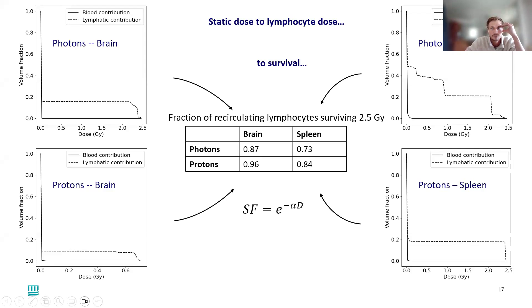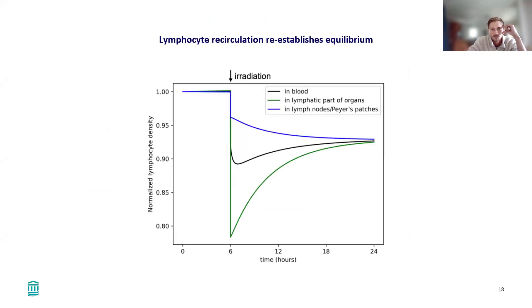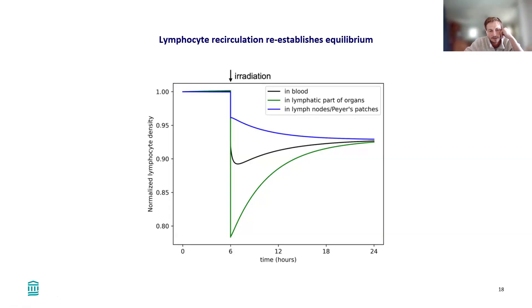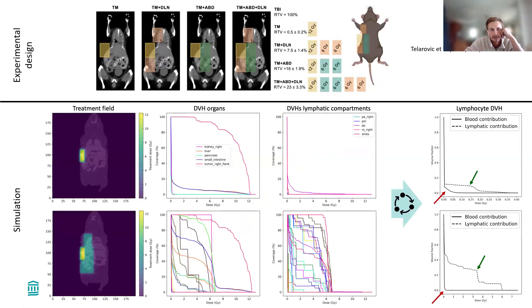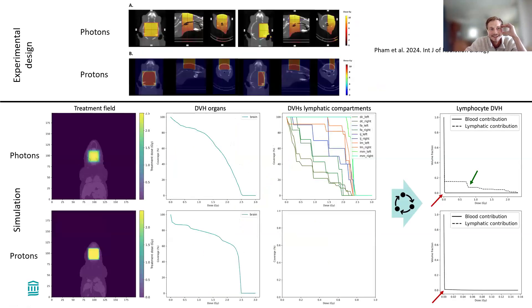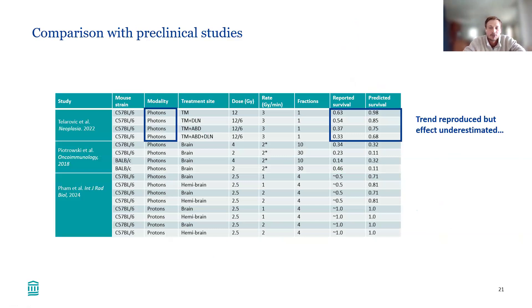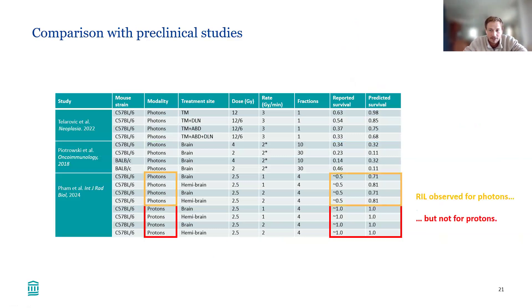You also observe that the blood contribution to lymphocyte dose is actually very negligible compared to the contribution of lymphoid organs. The dynamics are: irradiation depletes lymphocytes in the blood, lymph nodes, and Peyer's patches, but then a new equilibrium is reestablished through the systemic circulation process. We were able to reproduce the trends observed in those experiments.